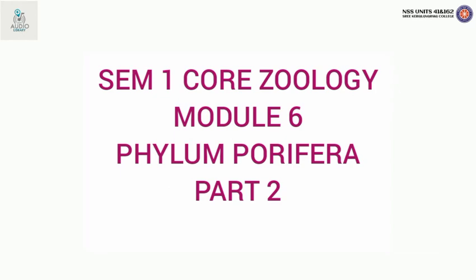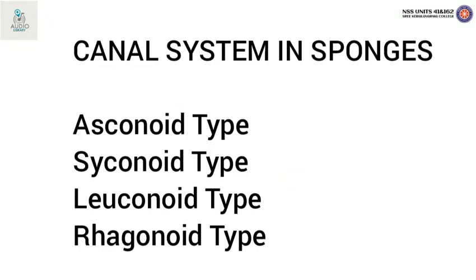Welcome back. Now we are going to talk about canal system. Canal system is a unique feature. It is a system of pores, canals and cavities through which water enters the body from outside, circulates within the body and finally passes out of the body. These canals are lined by flagellated collar cells called choanocytes.